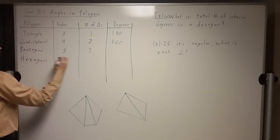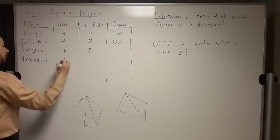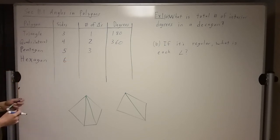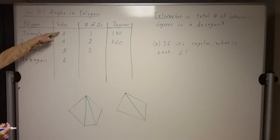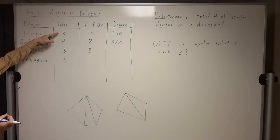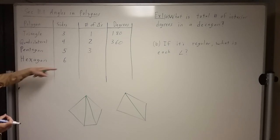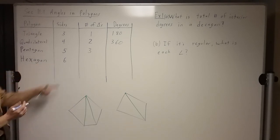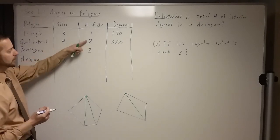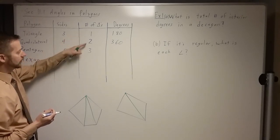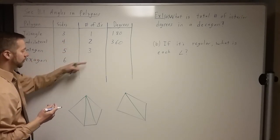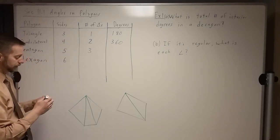Let's do one more. If you have a good pattern-seeking mind, you might be noticing a pattern. The sides are just going up by one. Do you notice the number of triangles? It goes one, two, three — sure looks like this one's going to be four.